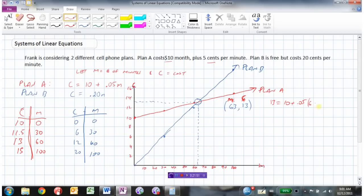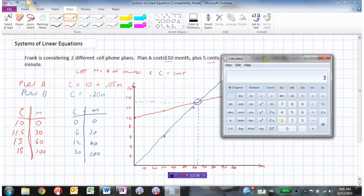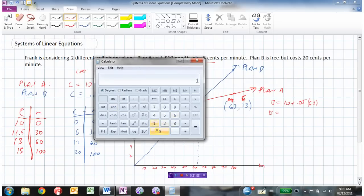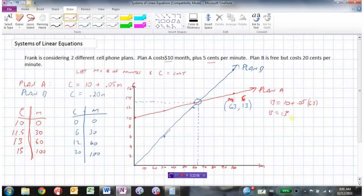So C is 13 equals 10 plus 0.05 times M, which is 63. So 10 plus 0.05 times 63, which is 13.15. So you can see it's not exact. 13.15 is not exactly 13, but it's close.